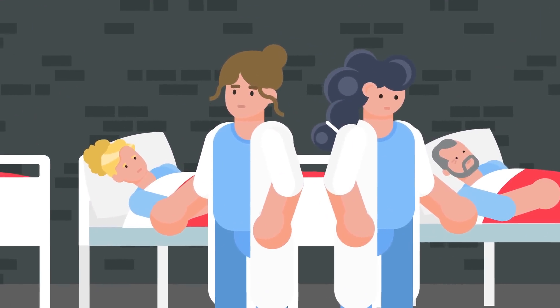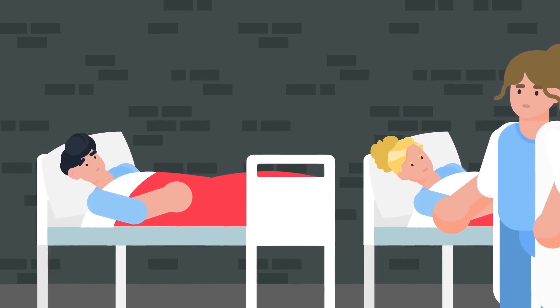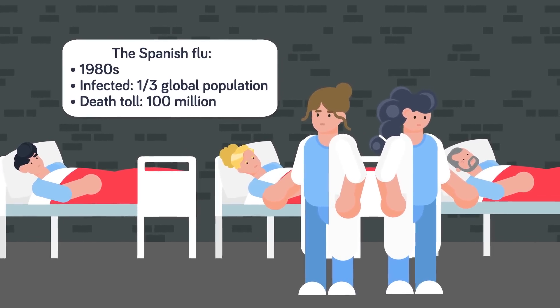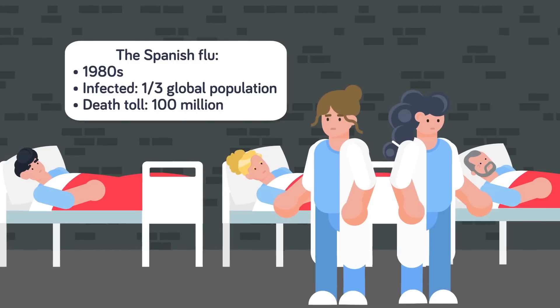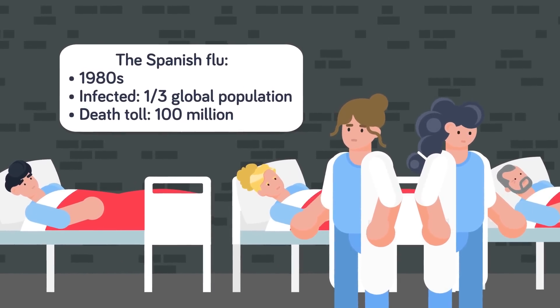The 1918 Spanish Flu was the deadliest pandemic in history, and it was all caused by a microscopic virus. By the time the outbreak ended in 1919, nearly one-third of the entire global population had been infected, and as many as 100 million people had died, 3% of the world's population.